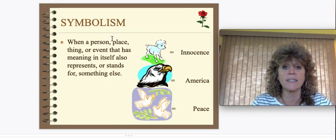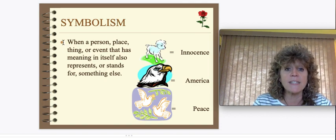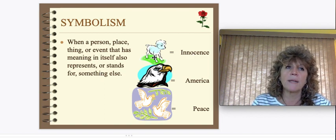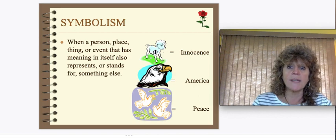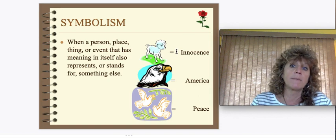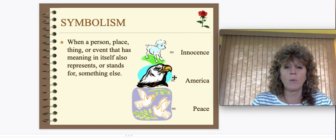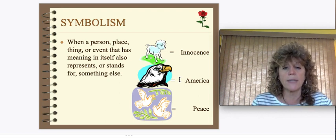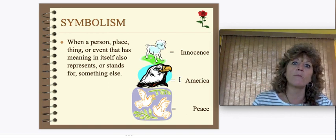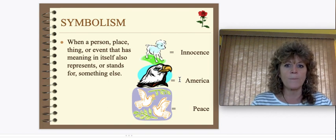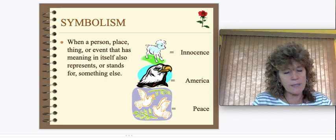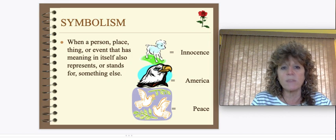Symbolism — we've talked a lot about this, but within poetry, symbolism is when a person, place, thing, or event that has meaning in itself also stands for something else. For instance, if you want to convey innocence in a poem, instead of saying the word innocent, you might say the lamb — because lambs are considered little, innocent, helpless. Same with the eagle: if you want to indicate strength or power, the eagle is America's symbol. A dove represents peace. You can also infuse some symbolism in your poems.